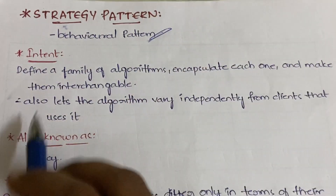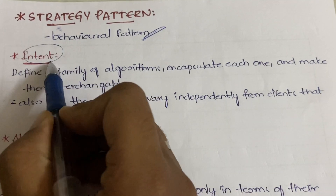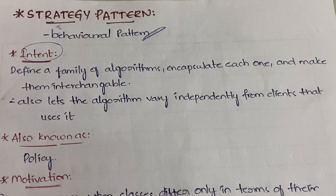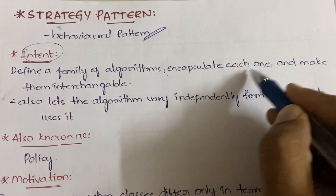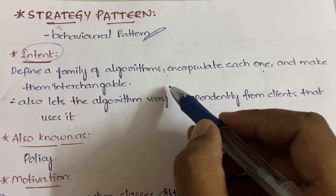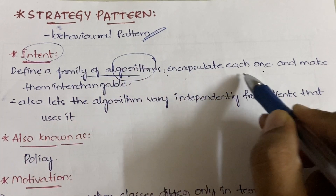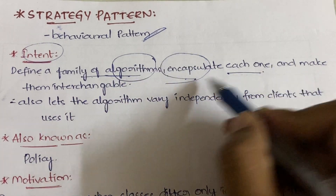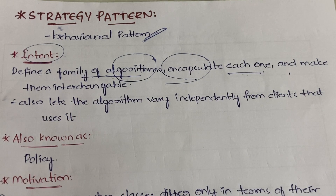It is a behavioral pattern as I already said. Moving over to the intent — why do we define intent? It is to know what the pattern is meant for. So it defines a family of algorithms, encapsulates each one, and makes them interchangeable. First it will define the algorithms, encapsulate each and every algorithm — you know what encapsulation is, binding together — and make them interchangeable so that according to the functionality we can change or adopt them.